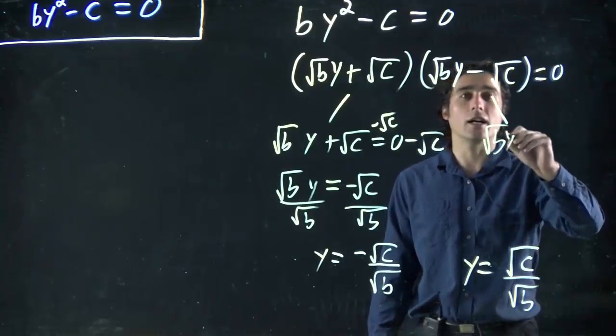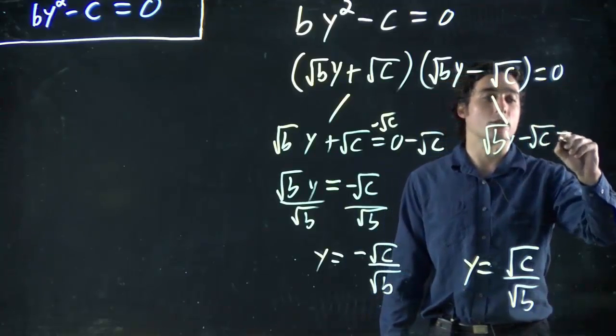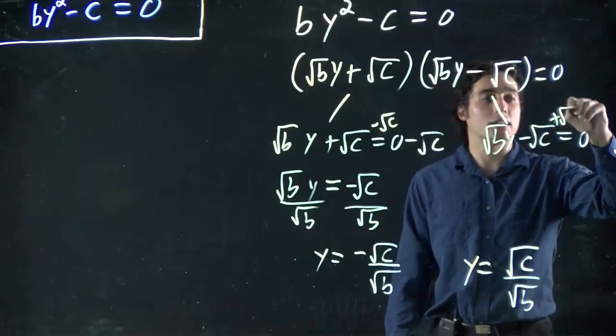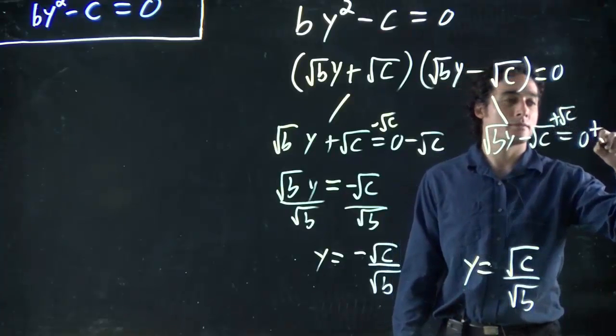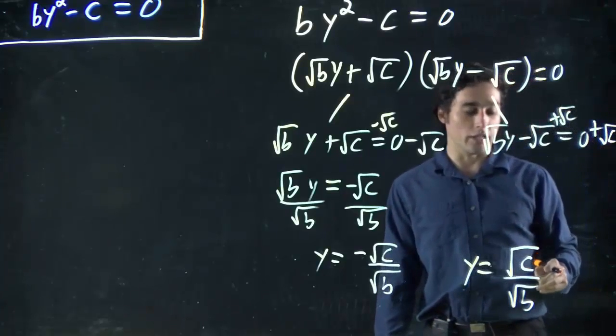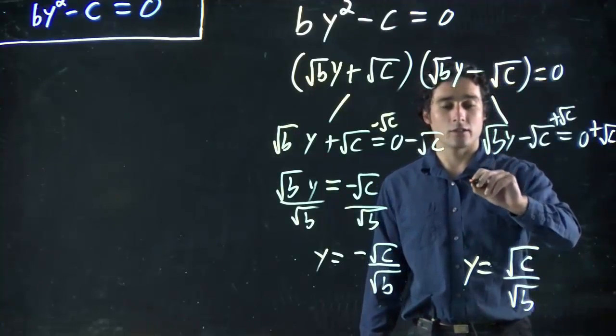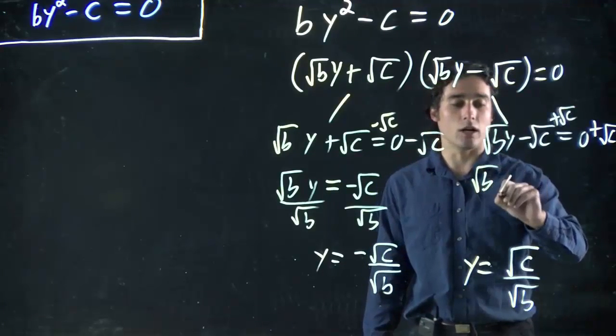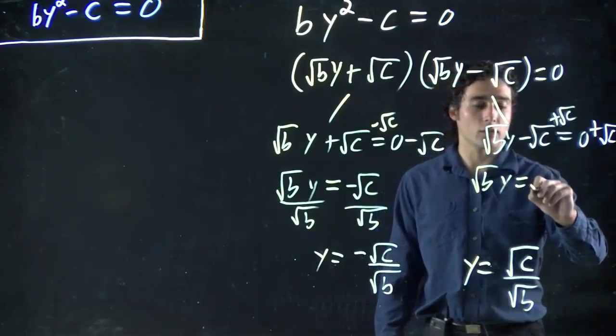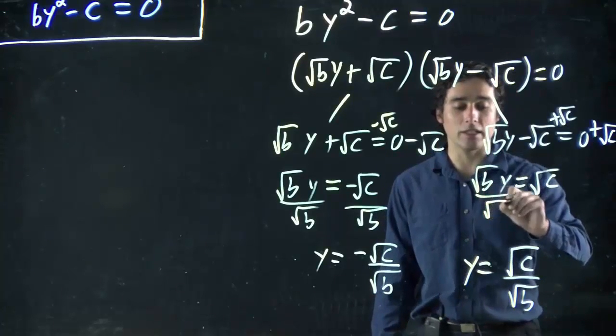I'm fairly confident I will be. So square root of b y minus square root of c equals 0. Add square root of c to both sides. Might be running out of room on that side. But what are we left with? Square root b y equals square root of c. Divide both sides by square root of b.